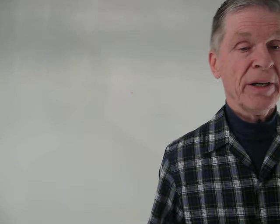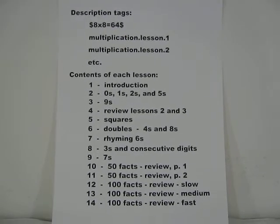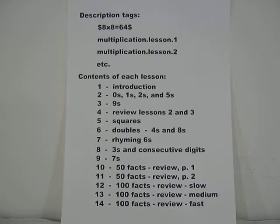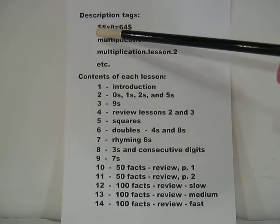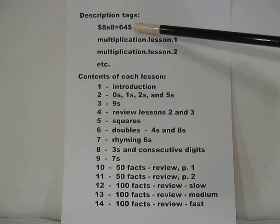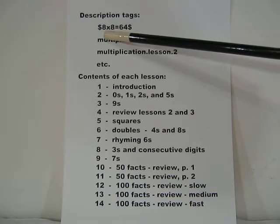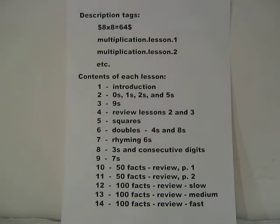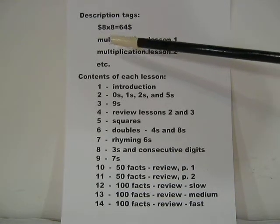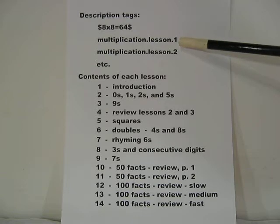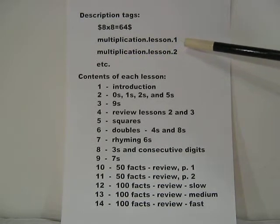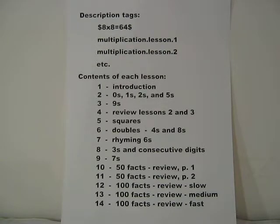Now let us go take a look at the description tags and the table of contents. We will bring our camera in close up so that we can see these things. The description tag that we use is $8x8=64$. Note that there is an X between the two 8's. You may also have arrived at these lessons by searching on multiplication.lesson.1 or multiplication.lesson.2, all the way down to .14.